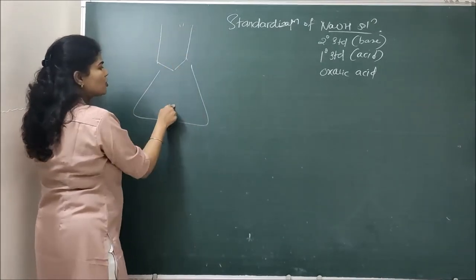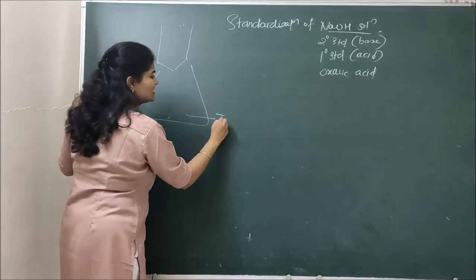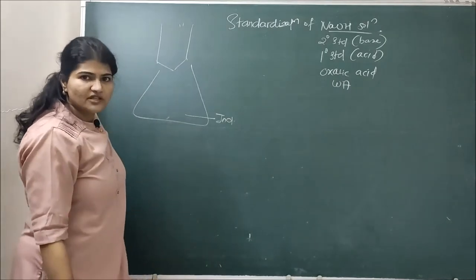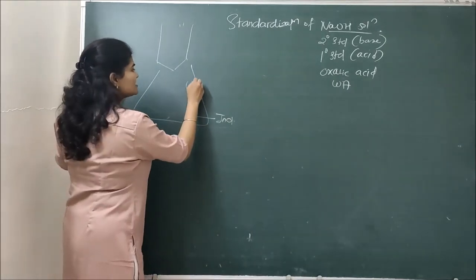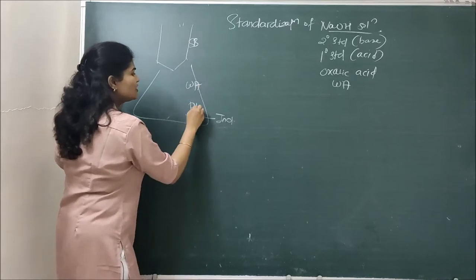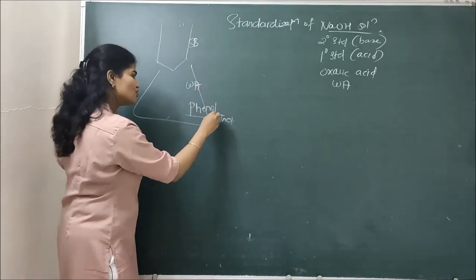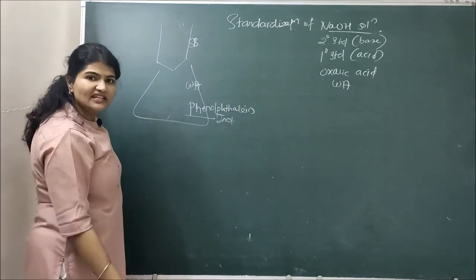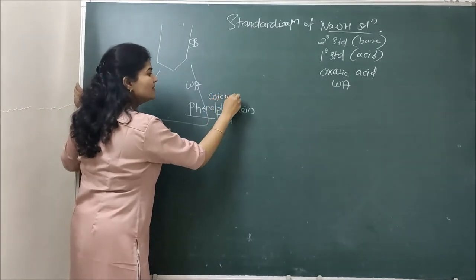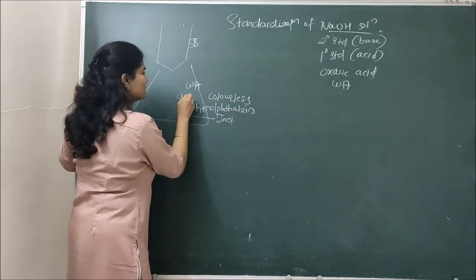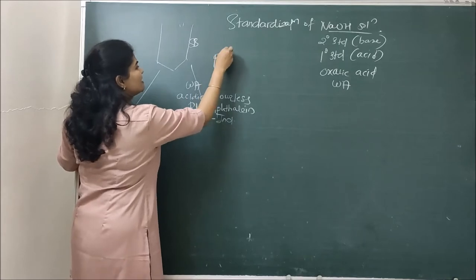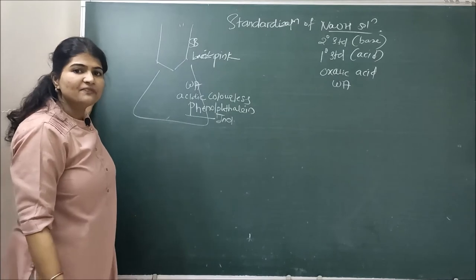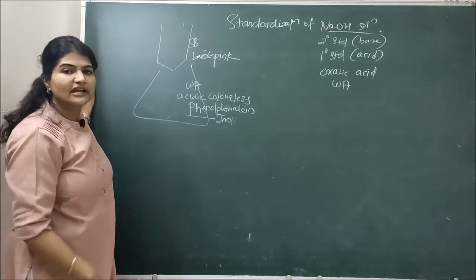In this titration, there will be something in the conical flask, something in the burette, and there will be one indicator. Oxalic acid is a weak acid and NaOH is a strong base. For a weak acid–strong base titration, phenolphthalein indicator is the indicator of choice. Phenolphthalein indicator will be colorless when your medium is acidic and it will turn pink when the medium becomes basic. So this indicator works very well for this kind of titration.